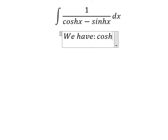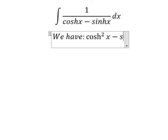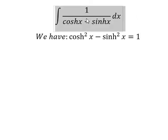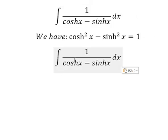Cosh squared x minus sinh squared x equals to one. So about number one, that is about this one.